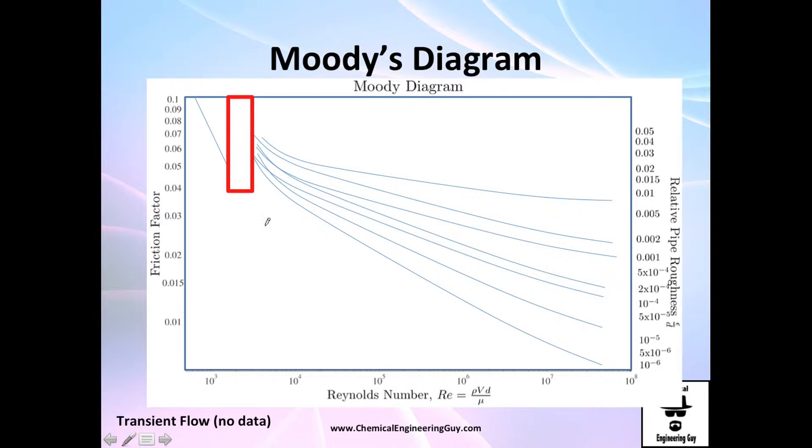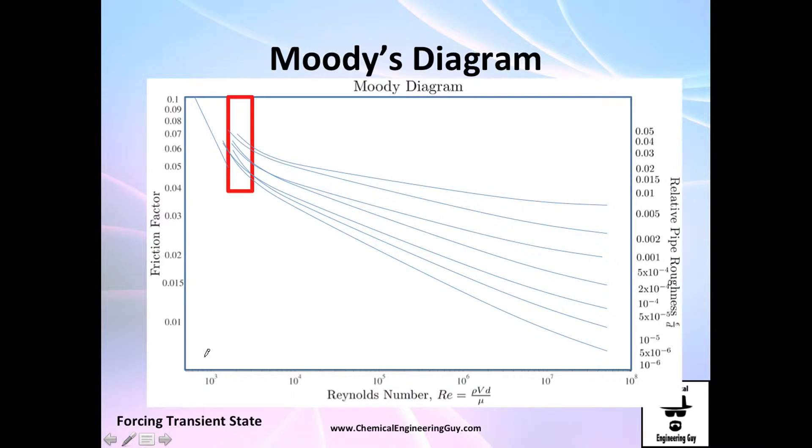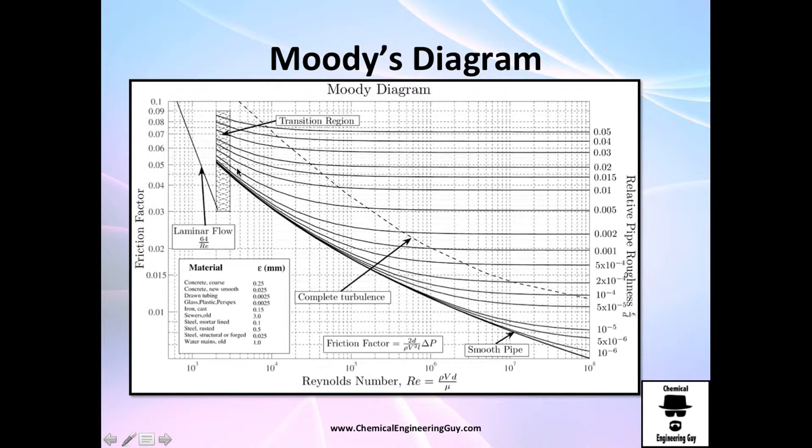Transient flow - remember that we don't have strict definitions. You will find many diagrams that show it. But it depends on what type of experiment, and if it is more transient or more laminar, use laminar. If it is more turbulent, they tell you to use turbulent. So actually I will recommend you not to use this part.